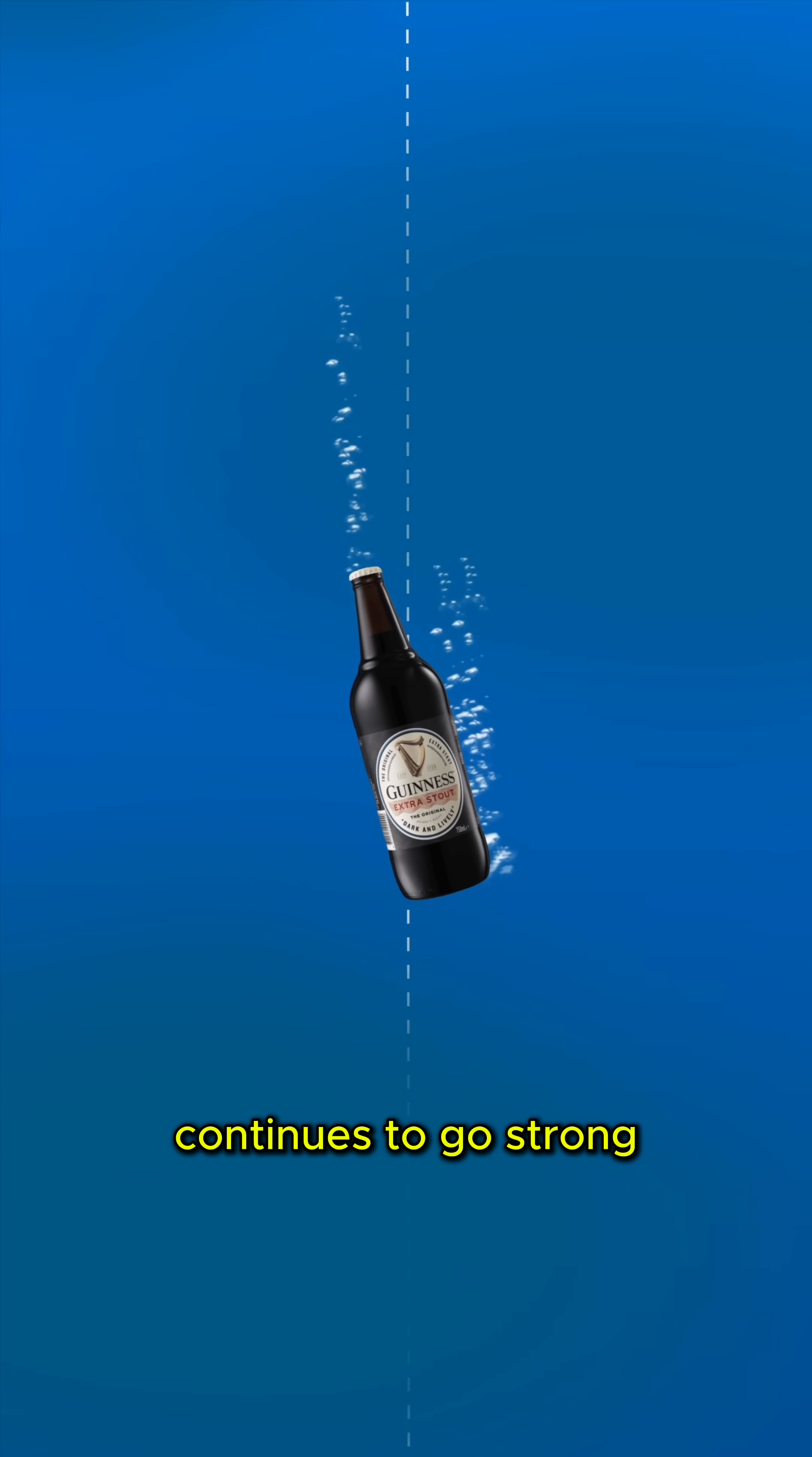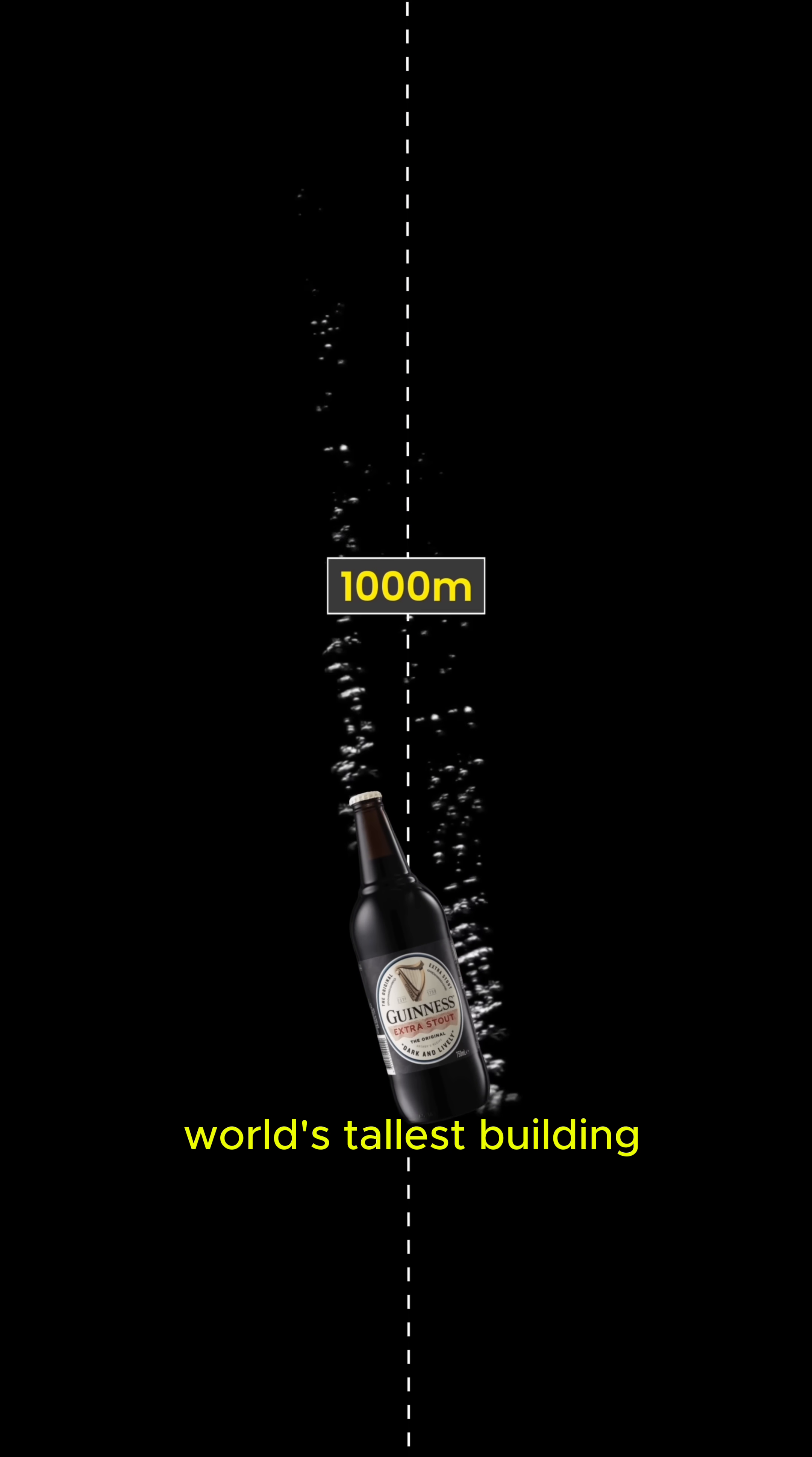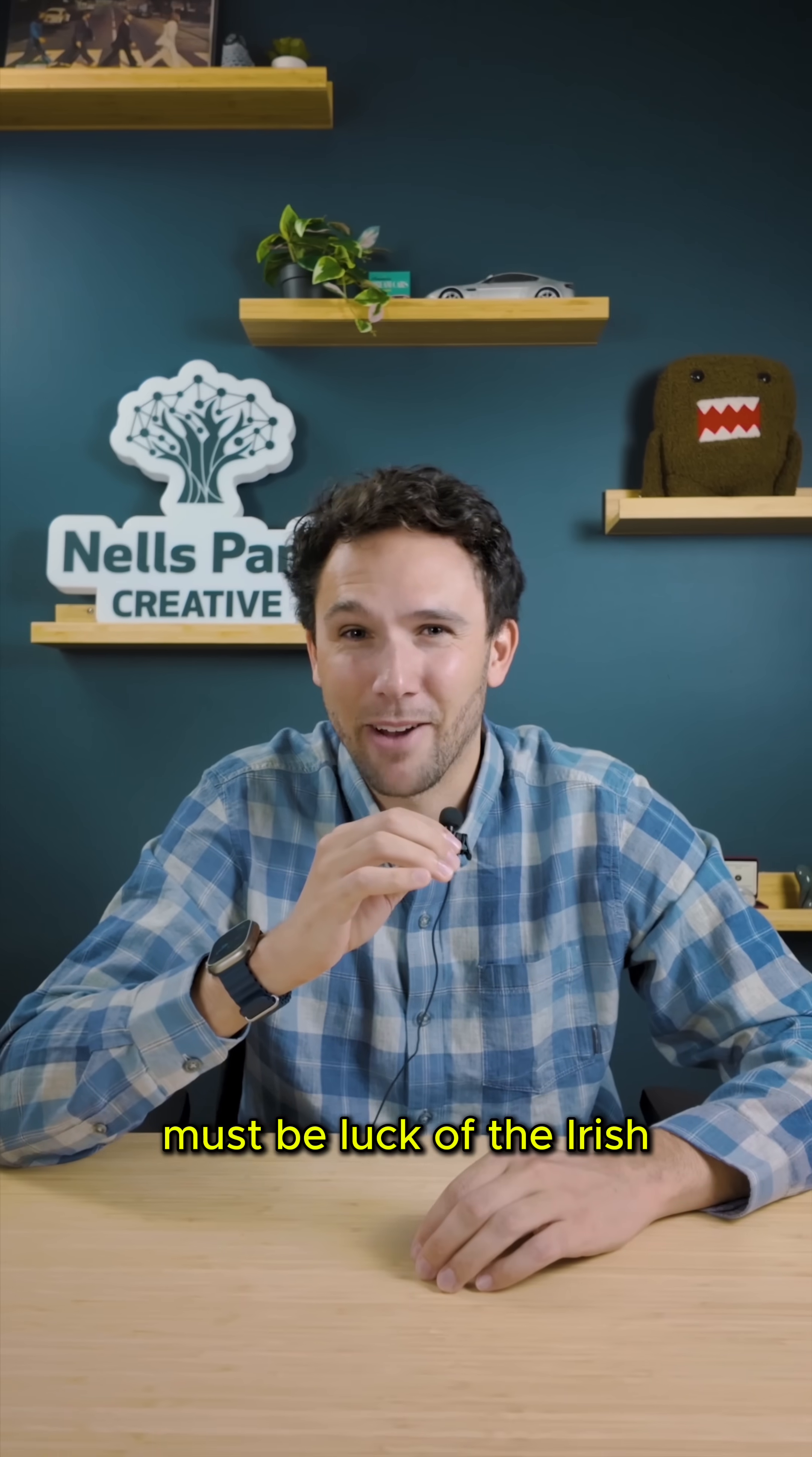The bottle of Guinness beer continues to go strong, making it 240 meters deeper than the height of the world's tallest building to 1168 meters where it implodes. Must be luck of the Irish.